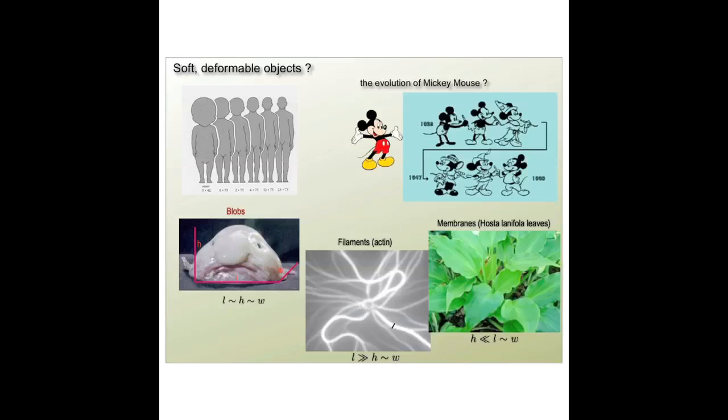But I could have the opposite. I could have the thickness be much smaller than the other two dimensions. So I have three dimensions. I can make them all comparable to each other or I can make one small compared to the other two or I can make one large compared to the other two. When I make one large compared to the other two I get a filament. When I have one small compared to the other two I have a leaf-like sub-object. Your skin is essentially two-dimensional. Its thickness is very small but its lateral extent is huge.